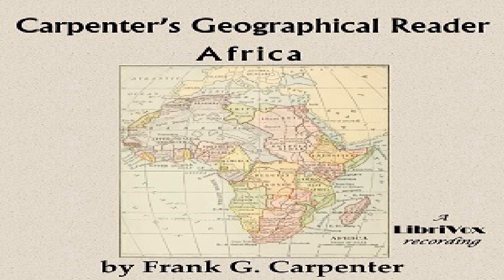Leaving Algiers we go by railroad to the city of Constantine in the eastern part of the country, traveling for miles through vineyards where Berbers are picking grapes and making wine. Much of the way is across a plain with ranges of mountains in view; we see Arabs plowing the fields using donkeys, mules, oxen, or camels with their characteristic crooked-stick plows. On our way through the mountains we look in vain for the Numidian lions famous in the days of old Rome — they were caught here and carried to Italy for gladiatorial shows — the lion has almost disappeared from this part of the world.